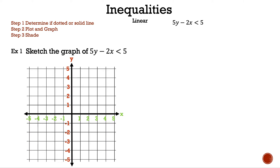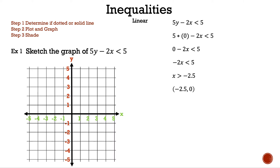We are going to keep the sign the same to help us when we plot. Now let's find the x-intercept by substituting 0 in for y. And now we have 5 times 0 minus 2x less than 5. And 5 times 0 is 0, so now we have 0 minus 2x less than 5. Let's drop that 0, so now we have negative 2x less than 5. Now we need to divide both sides by negative 2, so now we have x greater than negative 2.5. Remember to flip the sign since we divided by a negative number. And now we found our first point: negative 2.5, 0. Let's plot that on the graph. If we notice the point on the graph, it has an open circle, and that is because we have less than.